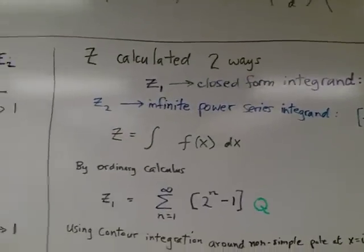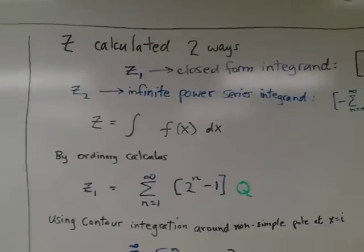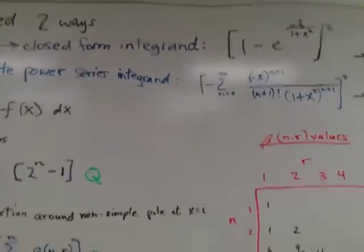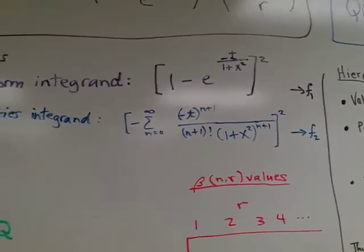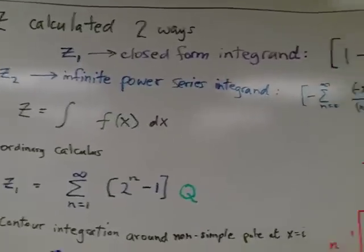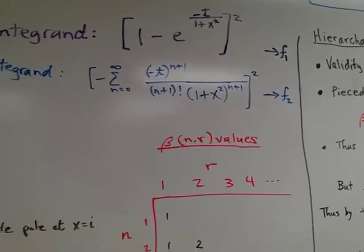Now, that Z can be calculated in two different ways using two different forms of the integrand. One is a closed form that's just a function, an exponential type function squared. And the other way is where you expand out that exponential as an infinite power series and square it.